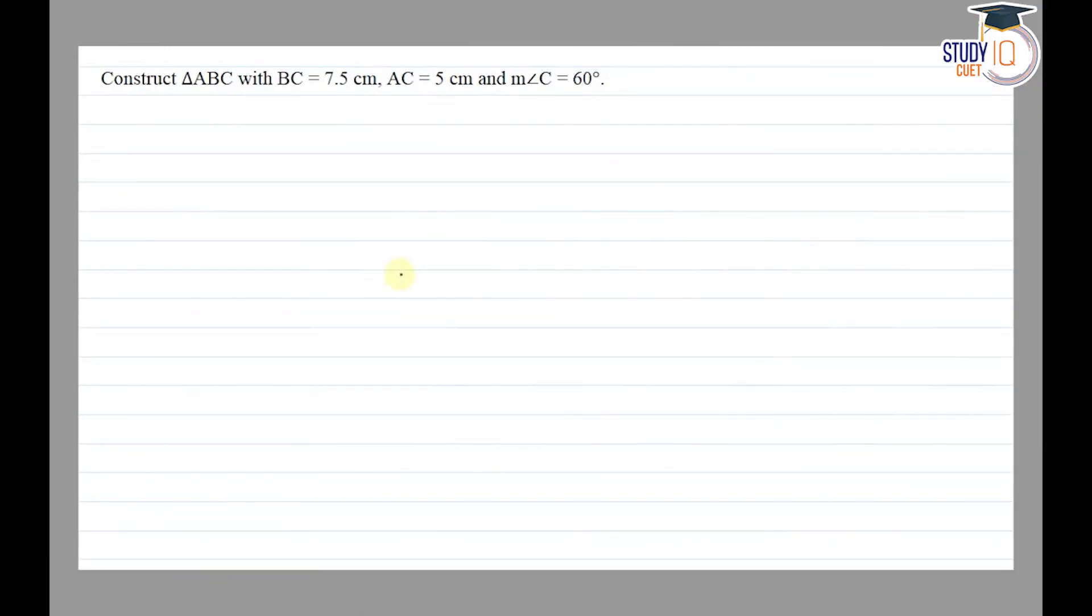Hello everyone, this question appears in class 7th NCERT chapter of practical geometry, question 3 of exercise 10.3. The question says construct triangle ABC with BC equal to 7.5 centimeter, AC equal to 5 centimeter, and angle C equal to 60 degrees.